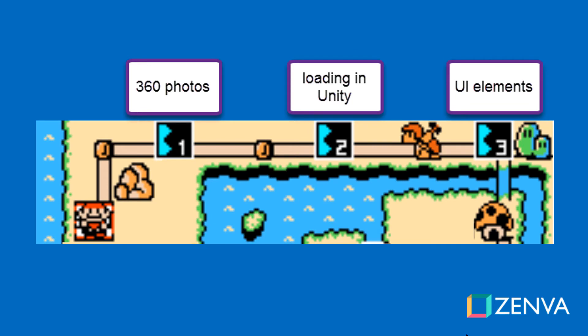Now how is this course structured? We are going to start by talking about 360 photos in general — what they are and usually what kind of formats you get with them. We will look at how to load them in Unity and implement the destination pins that you saw, so that we can move between scenes that contain different photos.